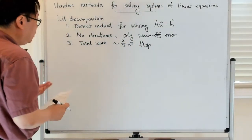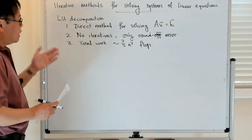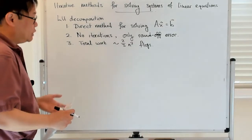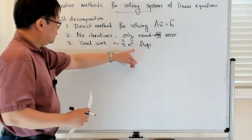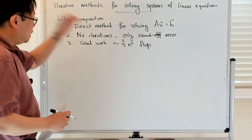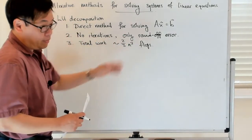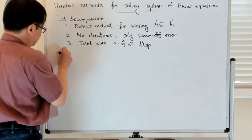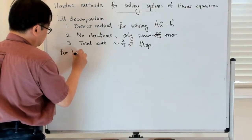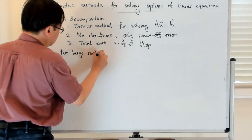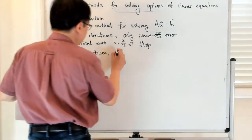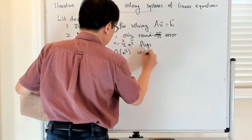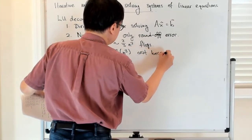So the problem with direct methods like LU decomposition is that if you're looking at large matrices, then this computational cost, which is cubic in the dimension, becomes prohibitive. For large matrices, this big O of n cubed cost becomes prohibitive.